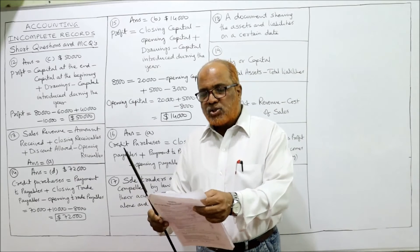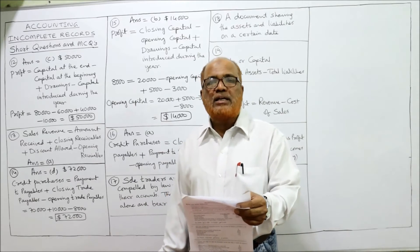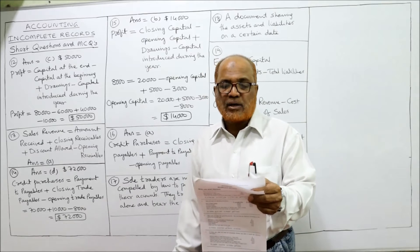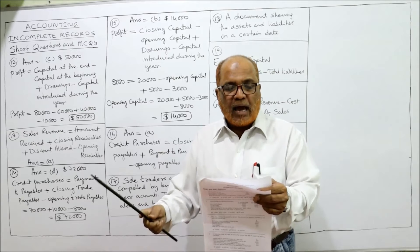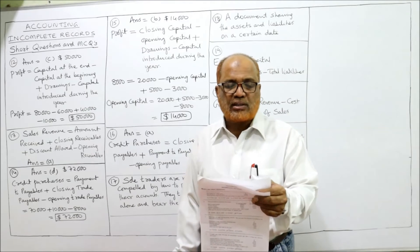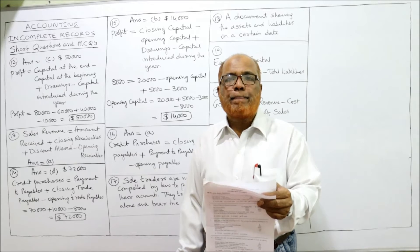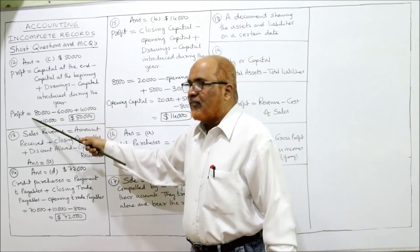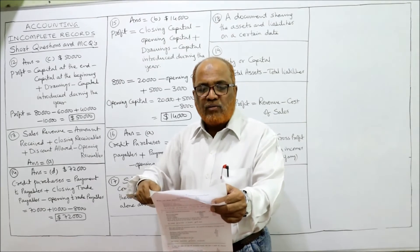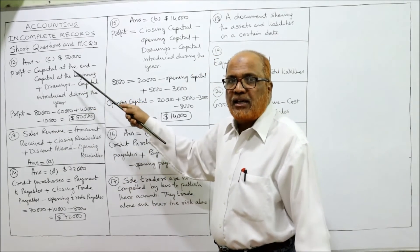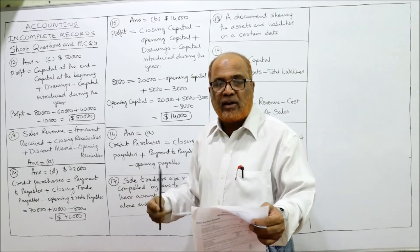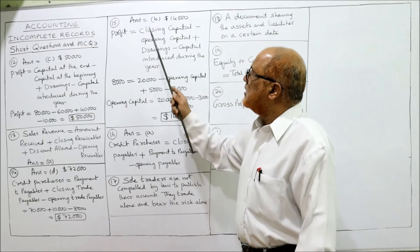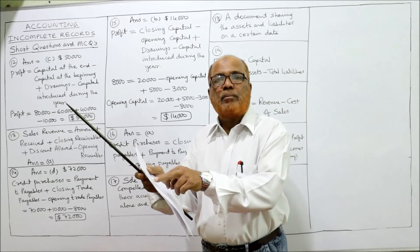Problem 15: a sole trader's accounts showed the following details at year end. Closing capital: $20,000 after drawings of $5,000; profit for the year: $8,000; capital introduced during the year: $3,000. What was the trader's opening capital? Here, profit is already given — we have to find the opening capital, which is the missing figure. The answer is B: $14,000.